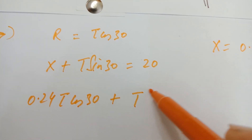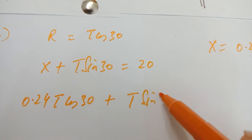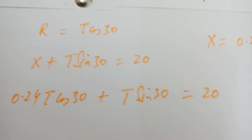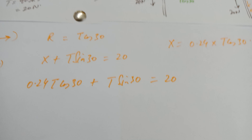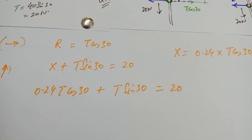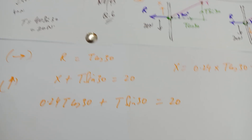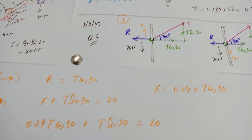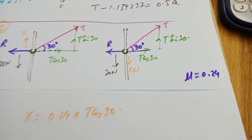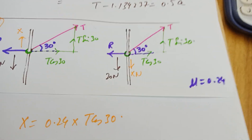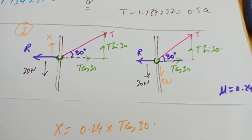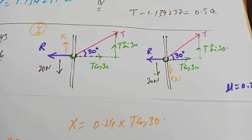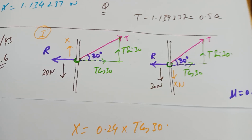You can solve 0.24 T cos 30 + T sin 30 = 20 to get T for the first case when the ring is about to slip downwards. I'll leave the second case for you to solve yourself. I'll now do one more question to conclude this chapter.